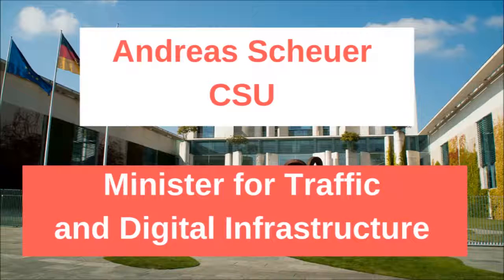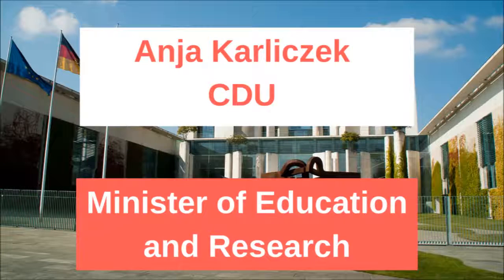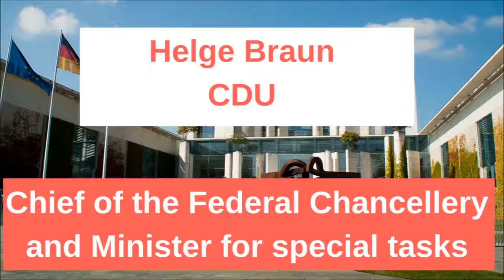The minister for traffic and digital infrastructure is Andreas Scheuer from the Christian Social Union. The minister for the environment, nature conservation and nuclear safety is Svenja Schulze from the Social Democrats — by the way, she is from the presenter's hometown. The minister of education and research is Anja Karliczek from the Christian Democratic Union. The minister of economic cooperation and development is Gerd Müller from the Christian Social Union. And finally, the chief of the Federal Chancellery and minister for special tasks is Helge Braun from the Christian Democrats.